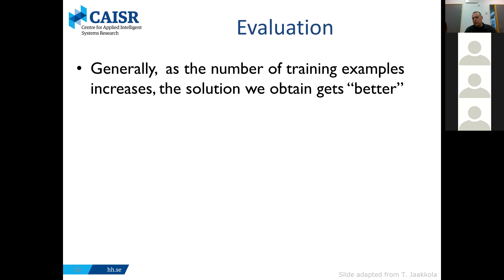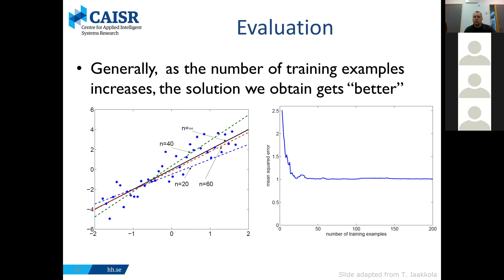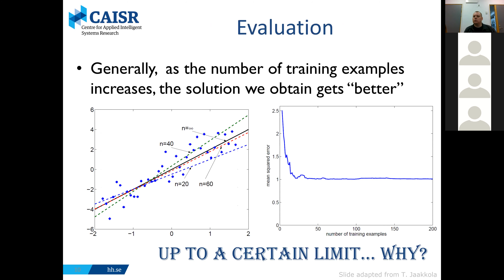What we are interested in is minimizing the expected loss over new, unseen examples. As the number of training examples increases, our solution gets better. Here is a simple example: fitting a line to data points. The more points you have, the closer you get to the correct underlying line. You can measure the mean squared error, which drops at the beginning and then tapers off — it improves for some number of examples, but at some point you reach a limit where adding more examples doesn't help.